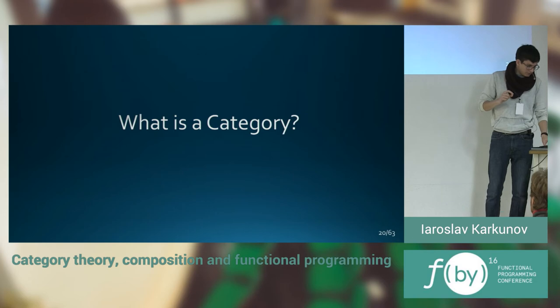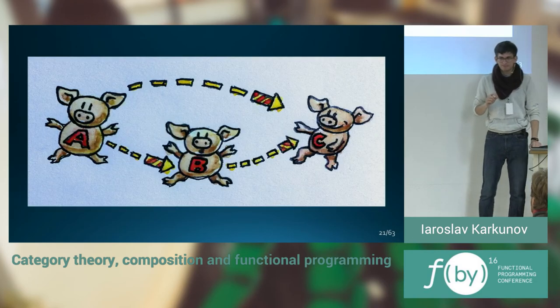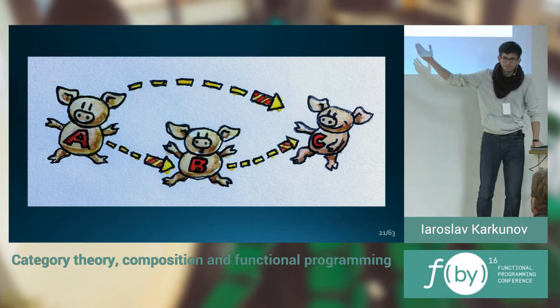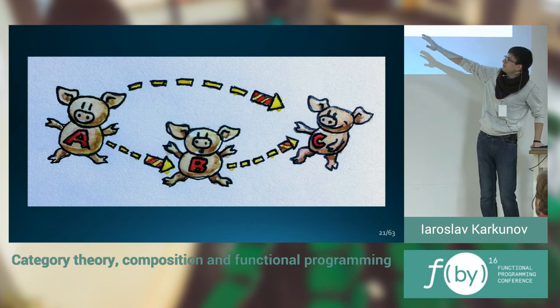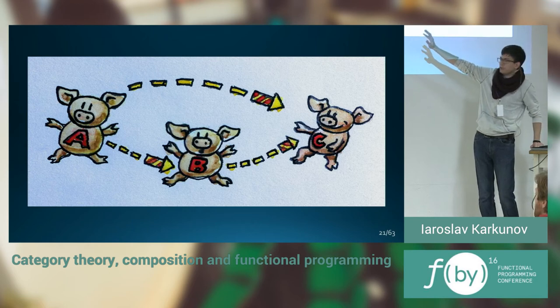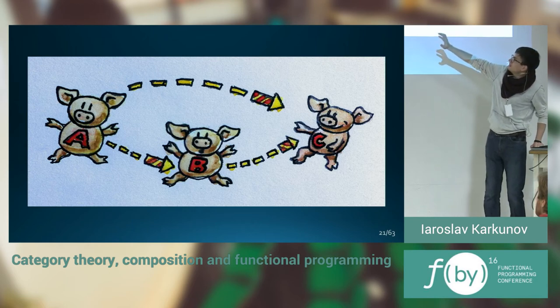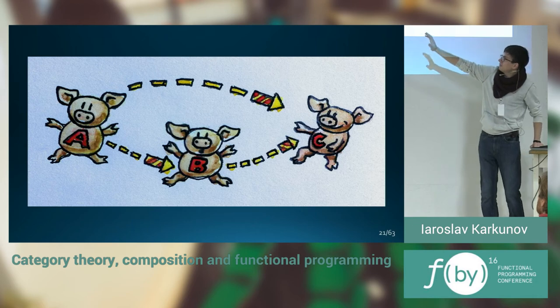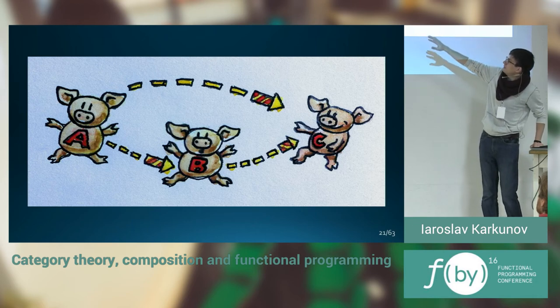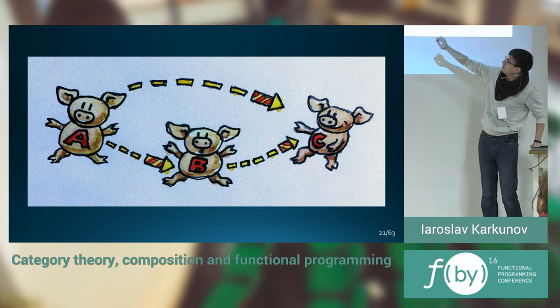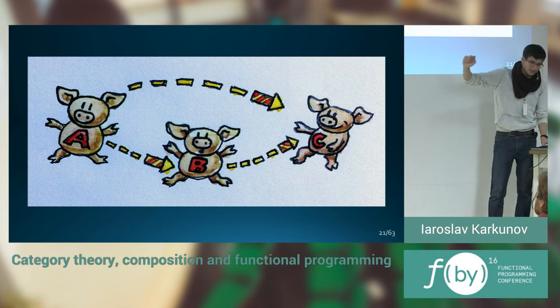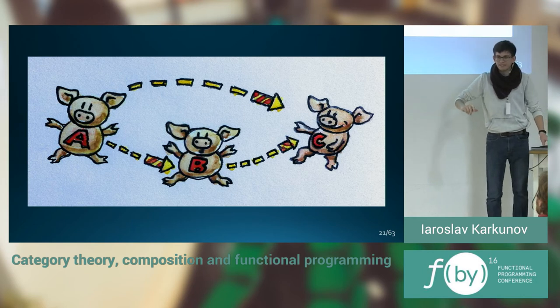What is a category? I want to show you one very simple picture with piggies. That is a category. Objects there are piggies. And they're shooting the fireworks at each other. It's very simple. There is an arrow from A to B piggy, and from B to C. And if there are those arrows, there must be some arrow from A to C. Take a photo.